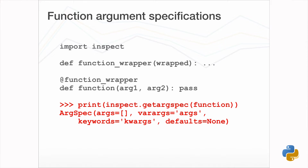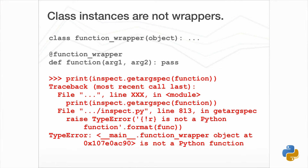We've managed to fix things up so that the function name and documentation string are correct. But what if we want to query the argument specification? This also fails — instead of returning the argument specification for the wrapped function, it returns that of the wrapper, which in the case of a function closure is the nested function. The decorator is therefore not signature-preserving. A worse situation occurs with the class wrapper: we get an exception complaining that the wrapped function isn't actually a function, making it impossible to derive an argument specification even though the wrapped function is still callable.